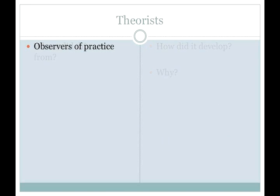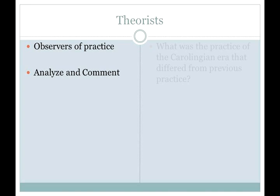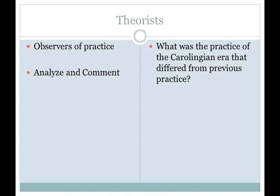Theorists, by nature, tend to be observers of musical practice. They analyze and comment upon current practice in order to discern and clarify its governing principles. So what was the current practice during the Carolingian period, and how did it differ from previous practice?